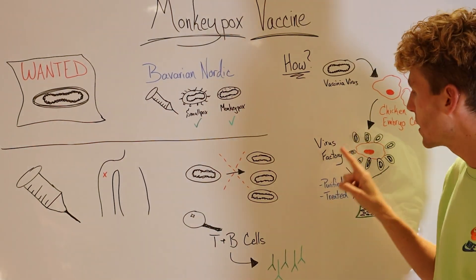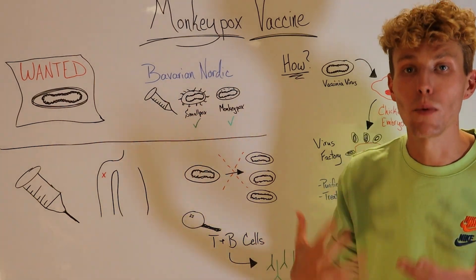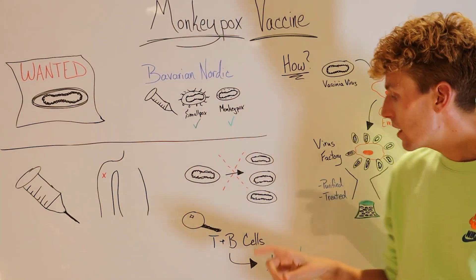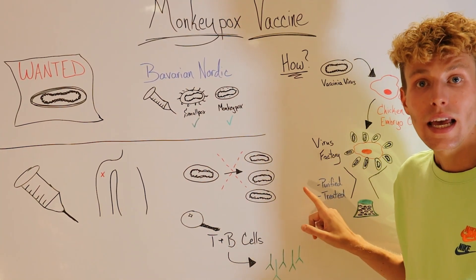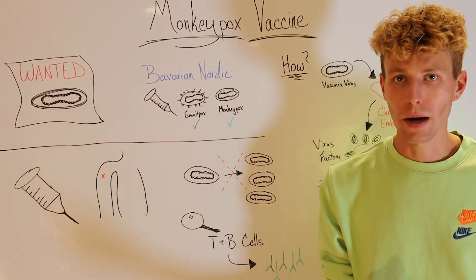Now those chicken embryo cells essentially became a virus factory, where they started making more and more of this virus. They then could purify out that virus and treat it with different chemicals, making it unable to replicate inside of our bodies.